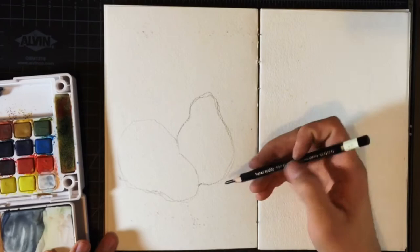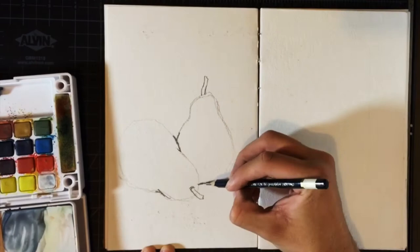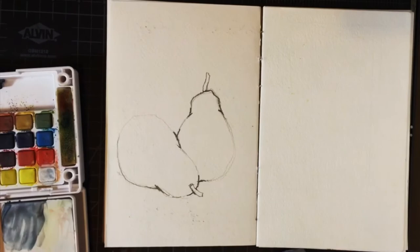I start with how I did in the first drawing and make the outline of the pears first. Now I emphasize the overlap of form. As you can see one pear is overlapping the other one so I have to emphasize those points as well.